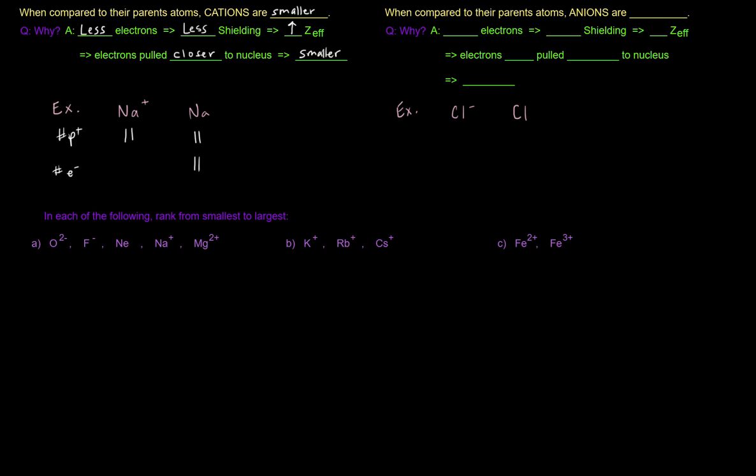Na plus, though, sodium ion, lost an electron, so it only has 10 electrons. So what's happening is that in the atom, these protons, these 11 protons, are pulling on these 11 electrons with a certain effective nuclear charge, right, effective charge. But the cation, when it has one less electron, the effect that these 11 positive charges have on these electrons is now greater, right? They're pulling those 10 in closer. And so between these two, the Na plus is smaller, okay?